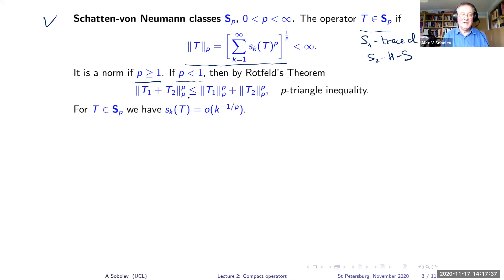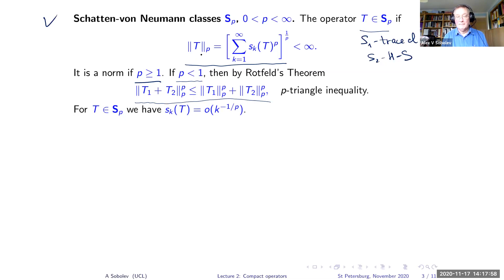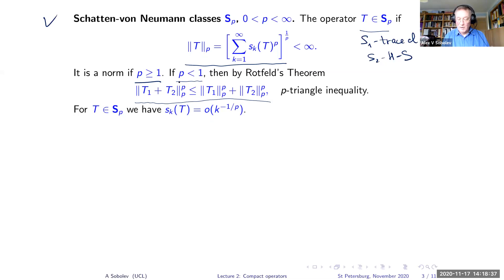The interesting case is p less than one, where we have a quasi-norm rather than a norm — the triangle inequality holds only with a constant greater than one. Nevertheless, by Rottfeld's theorem, we have a p-triangle inequality: instead of the norm or quasi-norm directly, this holds for the p-th power of the quantity. These spaces are complete with respect to the norm for p ≥ 1 and the quasi-norm for p < 1.